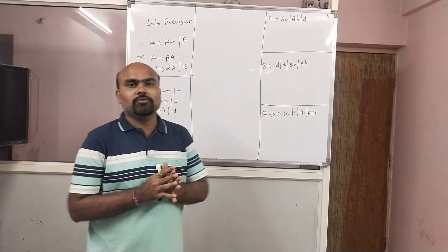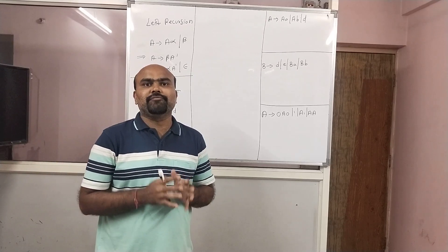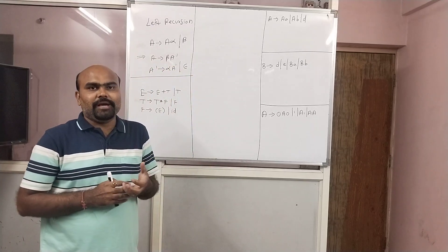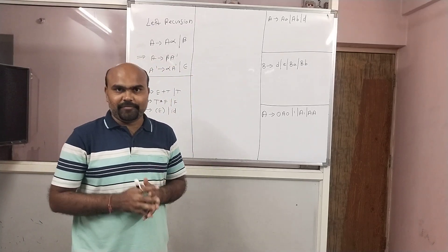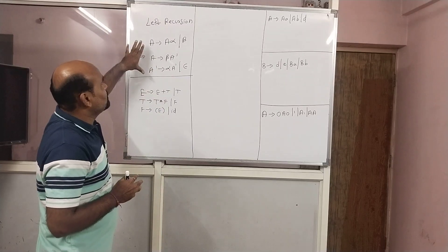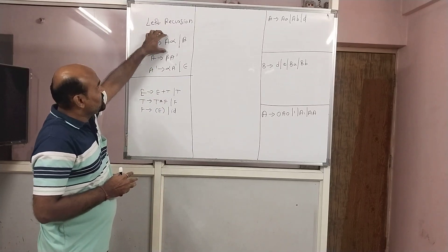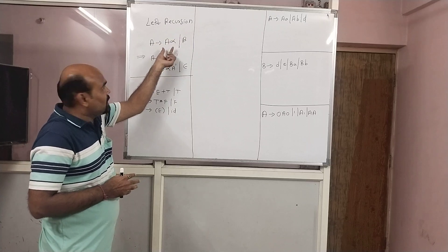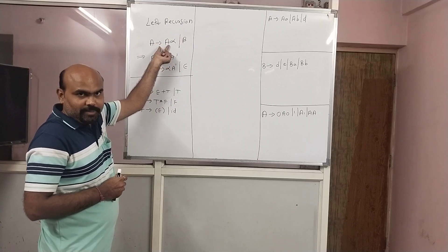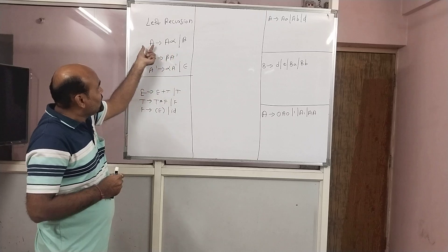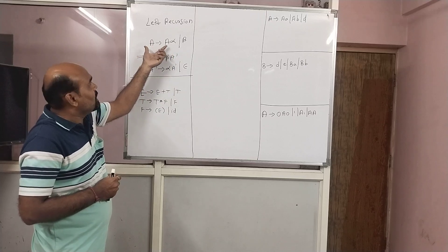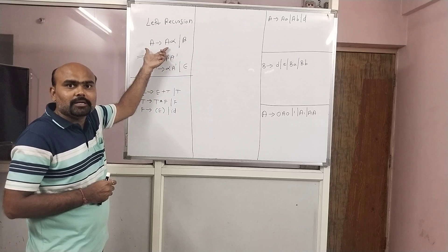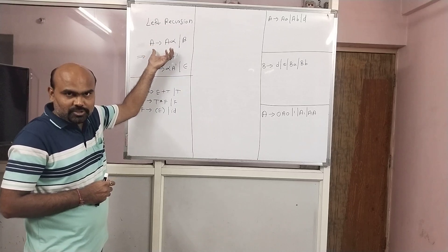In this session, we will see left recursion — how to remove left recursion. How to identify whether my grammar contains left recursion. This is the formula: A gives A alpha slash beta. For this production, if the first non-terminal on the left and the first non-terminal on the right are the same, it means our grammar contains a left recursion.